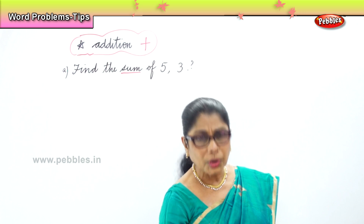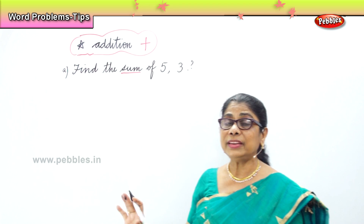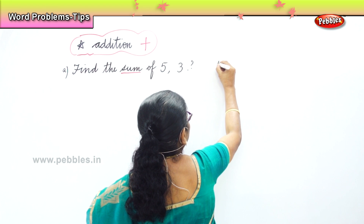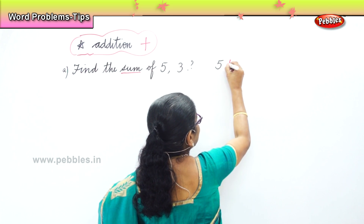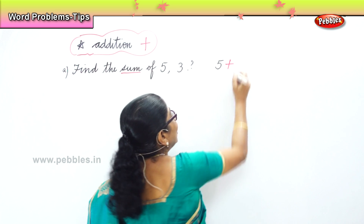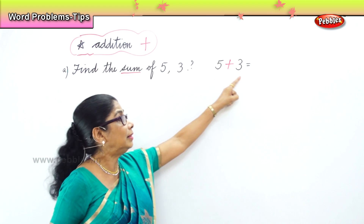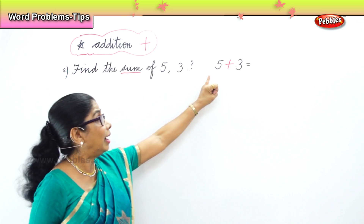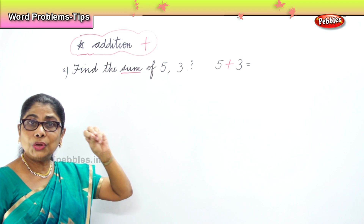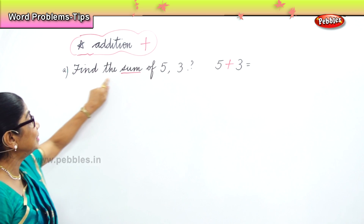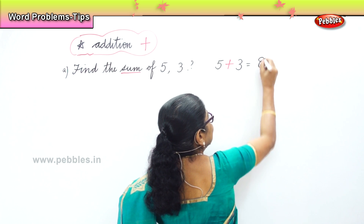Sum — when you talk about sum, what are you talking? Sum means addition, add. So, find the sum of five and three. That is five plus three. When we say sum of the two numbers, we mean addition. Find the sum of two numbers — when you say find the sum, it is addition. So, five plus three is eight. Answer is eight.